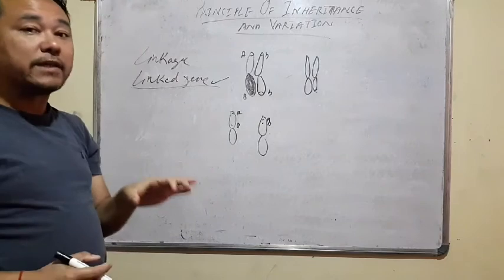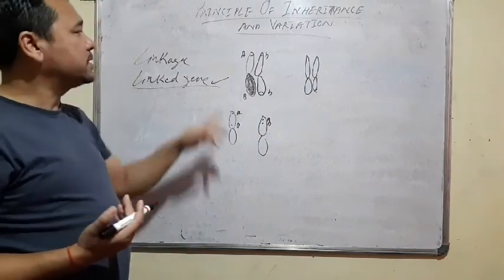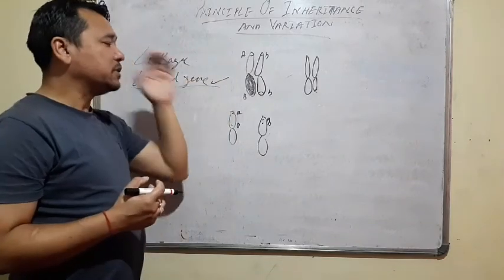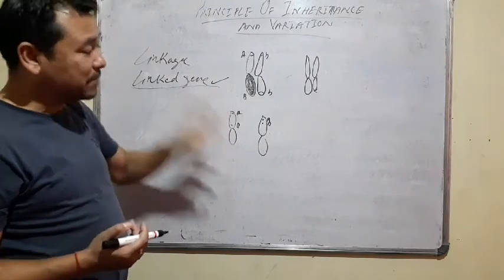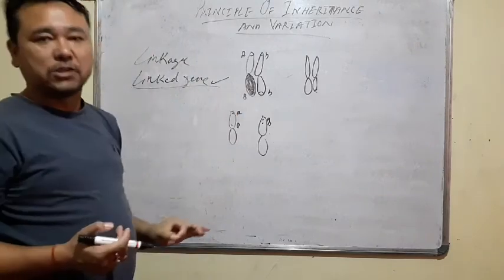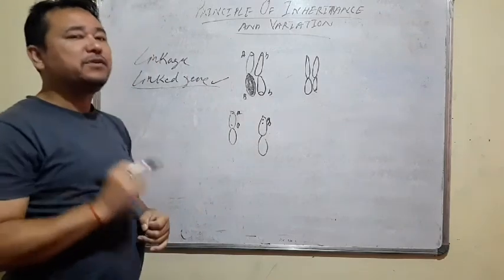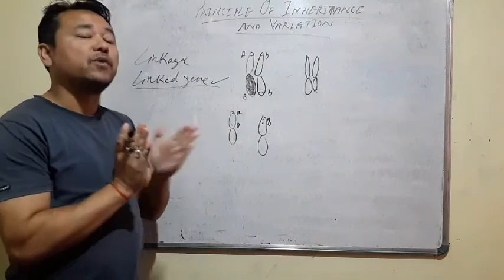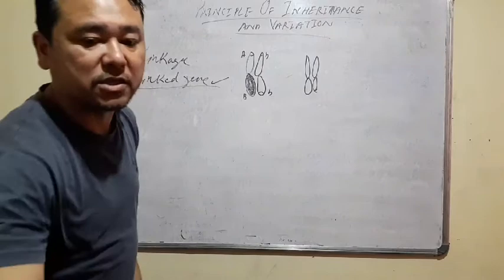Genes can be located in the same chromosomes in different arrangements. Sometimes two genes are located far from each other in the same chromosome. Sometimes the genes are located a little closer to each other. In some cases the genes are even very close to each other. These are the different possibilities. If the genes are located far from each other or close to each other, crossing over may occur.